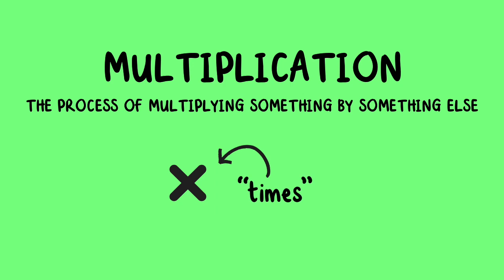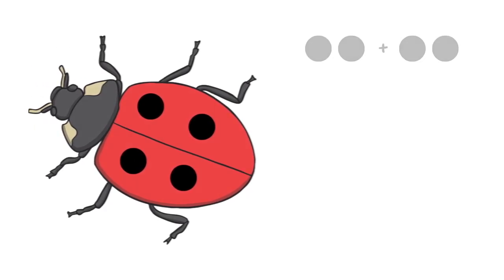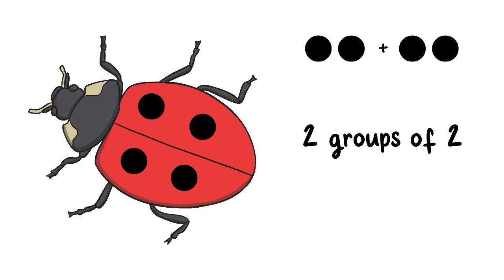As a mathematical operation, multiplication can be thought of as repeated addition. Let's look at how many spots the ladybug has. There are two groups of two. We can also write 2 times 2.